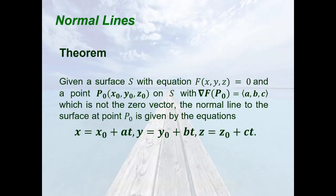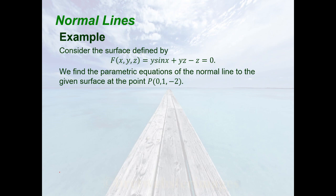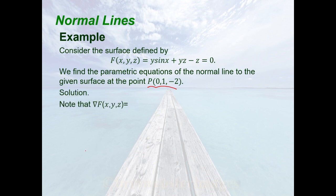To make this clear, let's have this example. Consider the surface defined by f(x, y, z) = y·sin(x) + yz − z = 0. We find the parametric equations of the normal line to the given surface at the point (0, 1, −2). Recall that we need the gradient of f at this point, so we determine the partial derivatives of f.